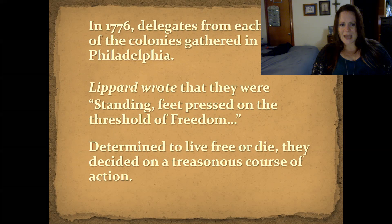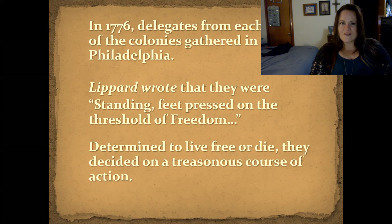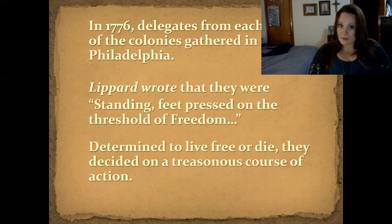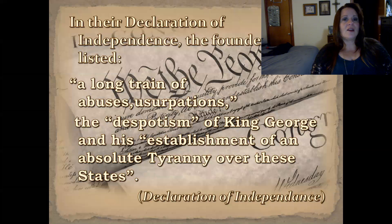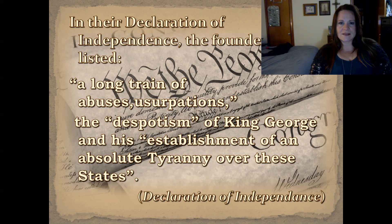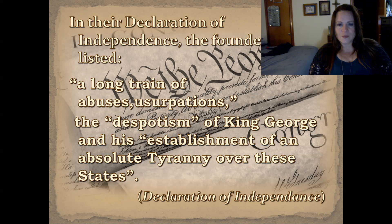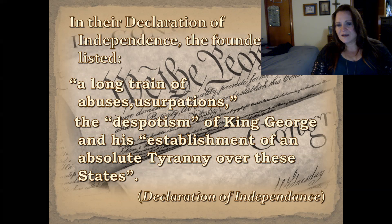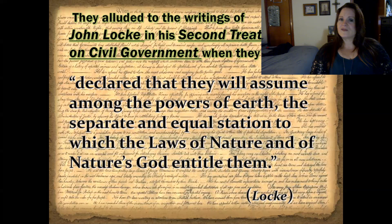In 1776, delegates from each of the colonies gathered in Philadelphia. Lepard wrote that they were standing, feet pressed on the threshold of freedom, determined to live free or die. They decided on a treasonous course of action. In their Declaration of Independence, the founders listed a long train of abuses and usurpations and the despotism of King George and his establishment of an absolute tyranny over these states.